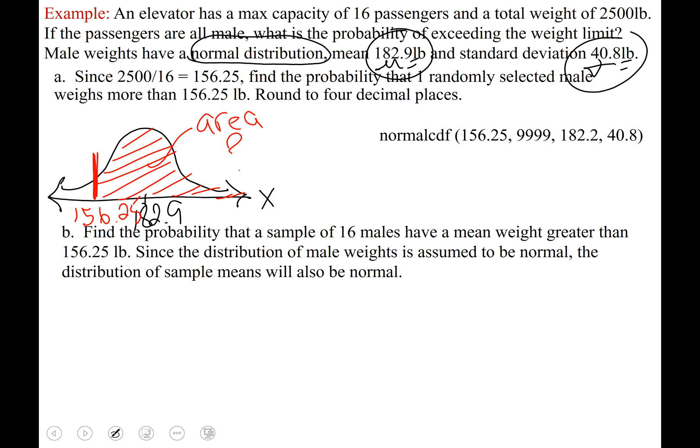Shading starts at 156.25, it stops at well we don't know where so I use a random 9999. Mu is 182.9 and sigma is 40.8. If we run that correctly we should get 0.7431819 and so on, accurate to four decimal places 0.7432. So to put that into perspective about 74 percent of men weigh more than 156.25 pounds.